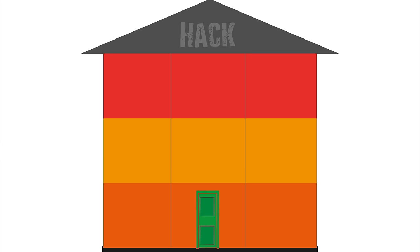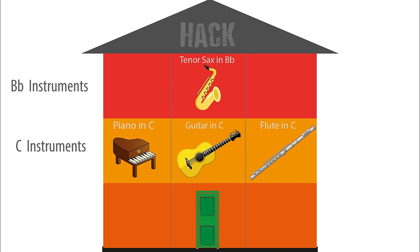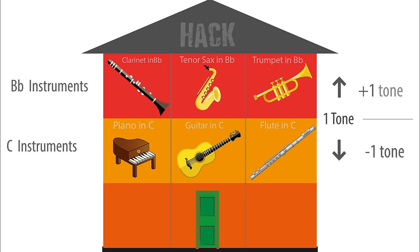Let's just go through this again. Think of a house: C instruments on the middle floor, like guitar, flute, and of course piano. And the Bb instruments are above, like tenor sax, trumpet, and Bb clarinet. The top floor instruments are a tone higher than the C instruments. Or another way to think of it is that the C instruments are a tone lower than the trumpet, tenor, and clarinet.